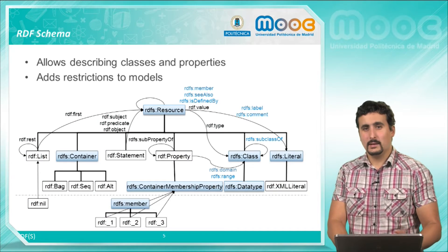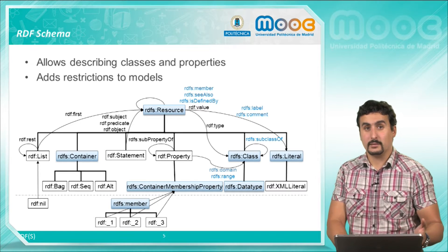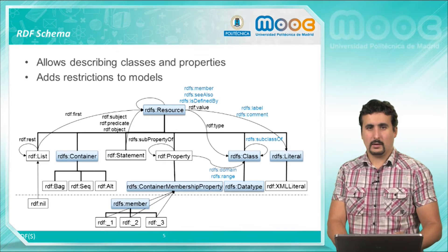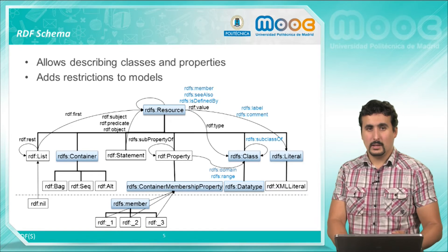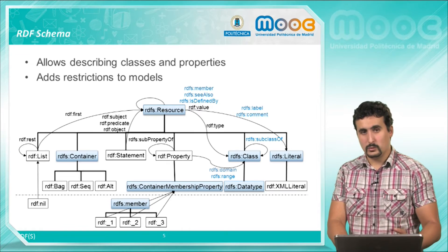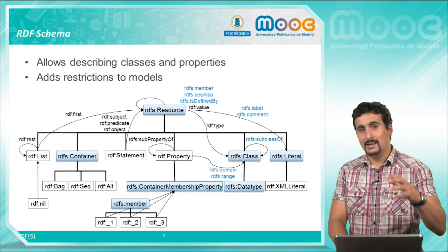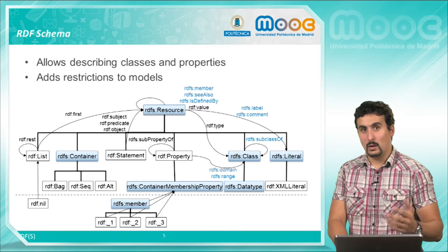Now in blue we have highlighted the elements introduced by RDF-S. As we see we have several classes and properties, including for example subclass, which will allow us to define the hierarchical taxonomy of classes in our model.